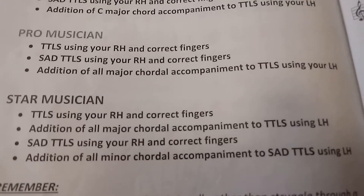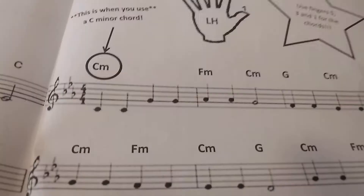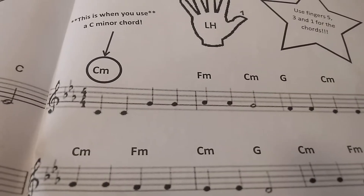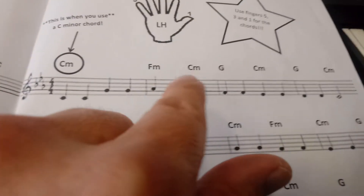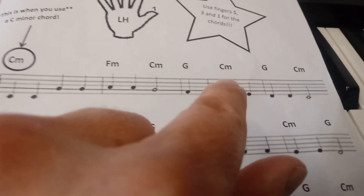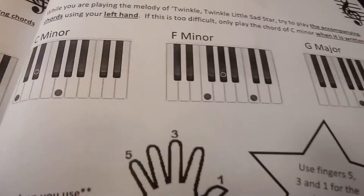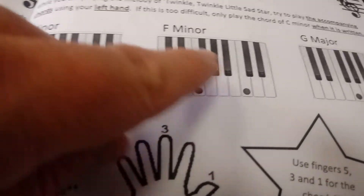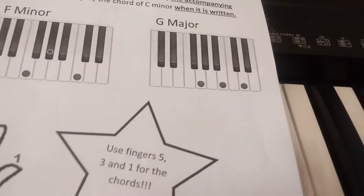Star musician, you need to do all that you've done before plus the minor chords with the minor melody. C minor, F minor, C minor, G major, C minor, G major, C minor. C minor has the black note instead of the white note. F major has the black note instead of the white middle note, and so does F minor.